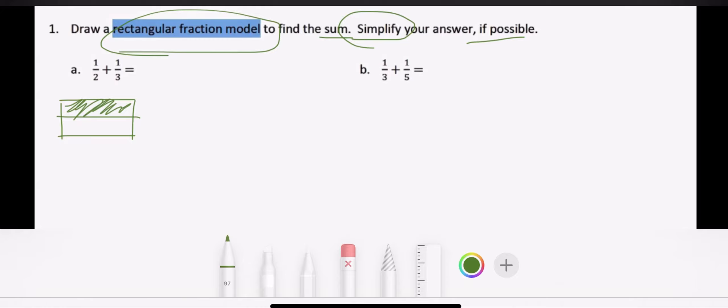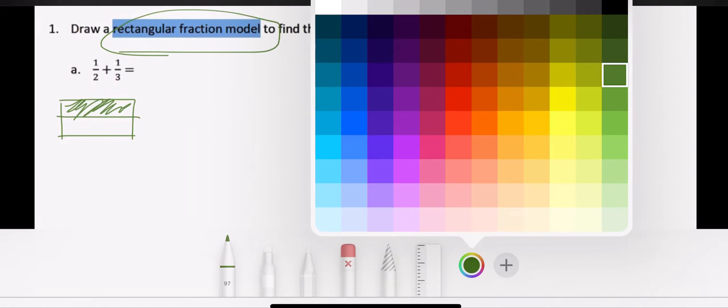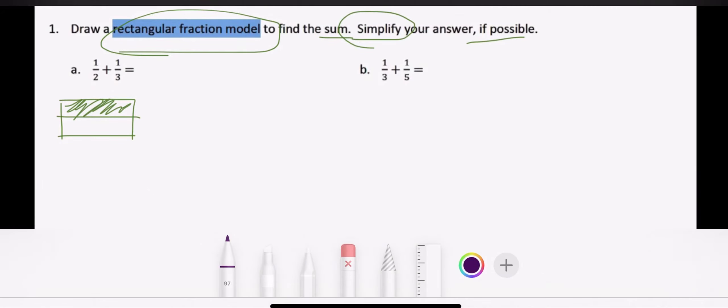And then I see my second part. I have one third. So I'm going to have to split that one into thirds. And I'm going to draw my lines vertically for this time since I did them horizontally or across the first time.